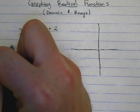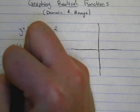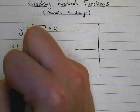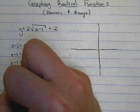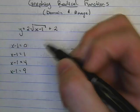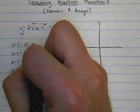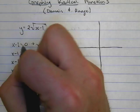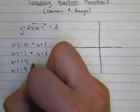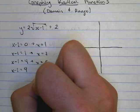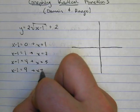So we'll set x minus 1 equal to 0, x minus 1 equal to 1, x minus 1 equal to 4, and x minus 1 equal to 9. When I solve for x on each of these, I find x equals 1, x equals 2, x equals 5, and x equals 10.